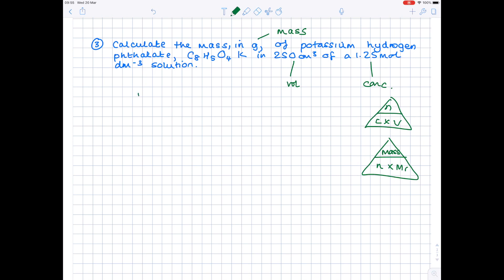So let's start by finding out the number of moles of C₈H₅O₄K. So we're going to do that by doing concentration. So that's what we've been told in the question is 1.25 times the volume, which is 250 centimetres cubed. And I'm directly going to divide that by 1000 to make sure that it's converted to the dm³ that it needs to be in. So our number of moles is 0.3125.